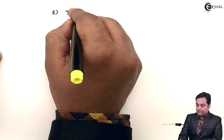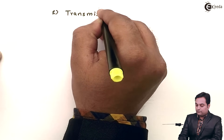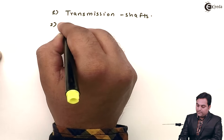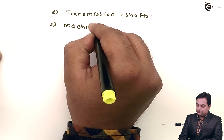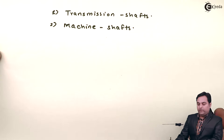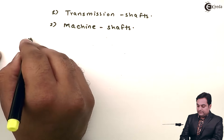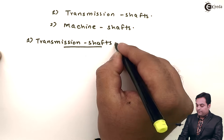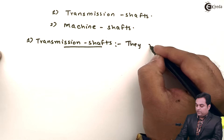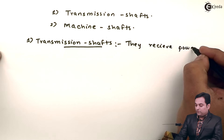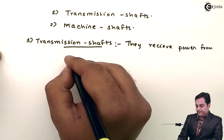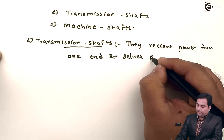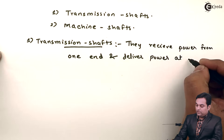There are two types of shafts. The first is called transmission shafts, and the second is called machine shafts. Transmission shafts receive power from one end and deliver power at the other end.